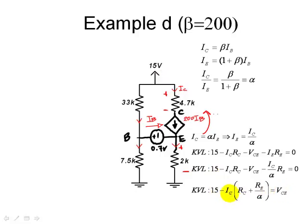15 volts, minus IC, plus the sum of RC, plus RE divided by alpha. Because alpha is so close to 1, very often, we will approximate it as if those two resistors were in series, and write it as just as RE.